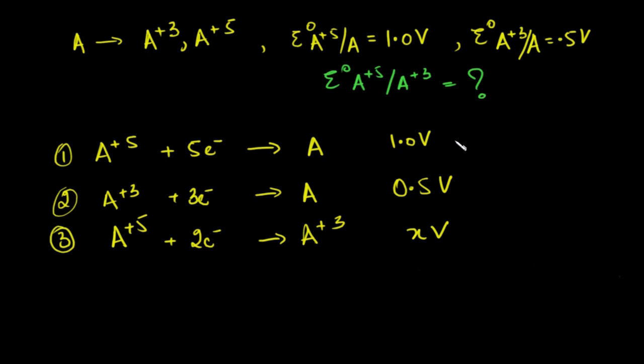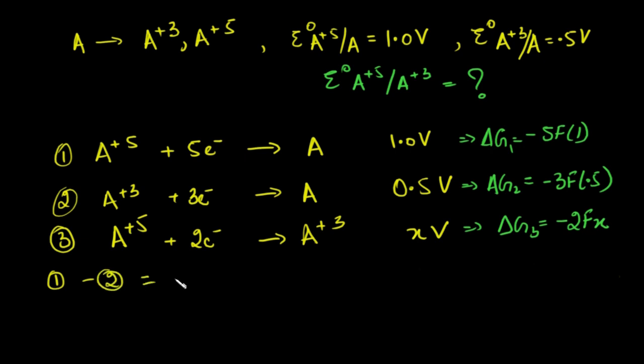This is why you cannot directly subtract. On the other hand, if we go back to the previous lecture, we learned that ΔG = -nFE. So for this reaction, ΔG₁ = -5F(1). For reaction 2, ΔG₂ = -3F(0.5). And ΔG₃ = -2Fx.